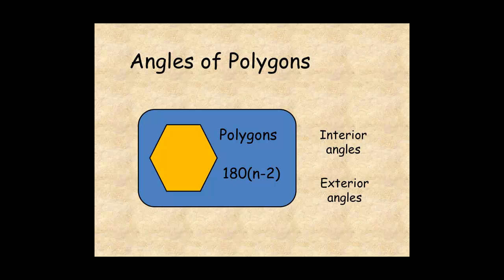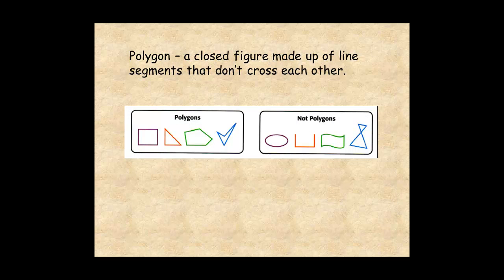This lesson helps you understand two important properties of polygons. A polygon is a closed figure made up of line segments that don't cross each other.